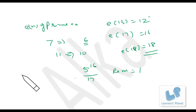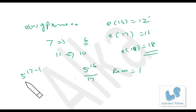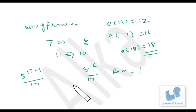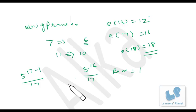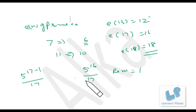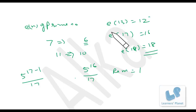Fermat's theorem says 5 raised to (17 minus 1) divided by 17 gives remainder 1. And that is exactly what we computed using Euler's concept — both approaches align.